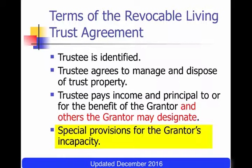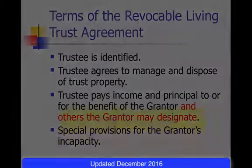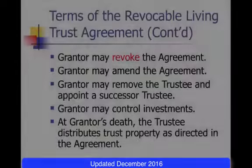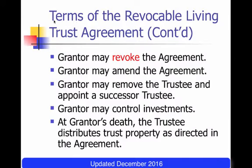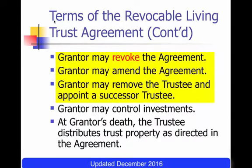The grantor may be worried that his incapacity could disrupt support to that other person. Important terms of the revocable living trust include the power in the grantor to revoke the agreement, the power to amend the agreement, and the power to remove the trustee and appoint a successor trustee.